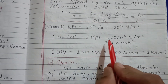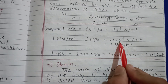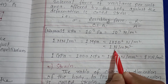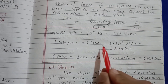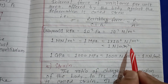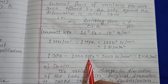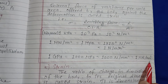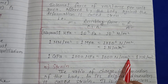One MPa equals one newton per mm². One GPa equals 1000 MPa, or 1000 newton per mm². One newton per mm² equals one into ten to the power six newton per meter squared, which equals one MPa.